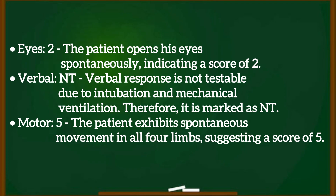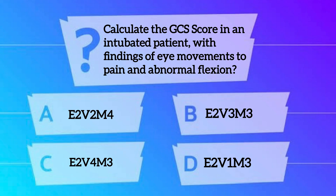Our next question: Calculate the GCS score in an intubated patient with findings of eye movements to pain and abnormal flexion. Option A: E2, V2, M4. Option B: E2, V3, M3. Option C: E2, V4, M3. Option D: E2, V1, M3. The correct option is Option D: E2, V1, M3.